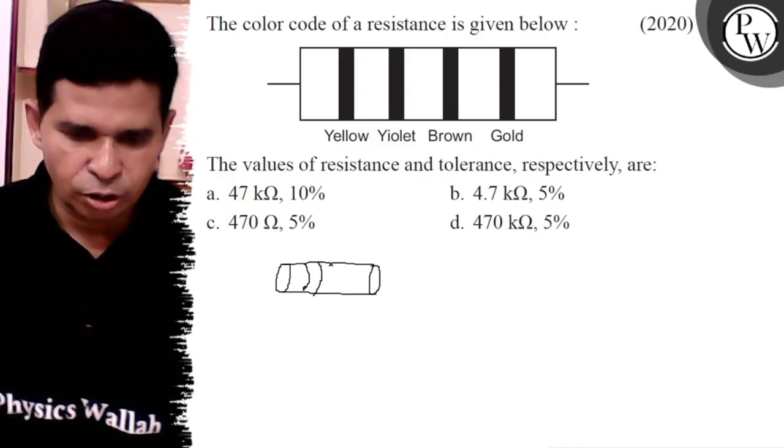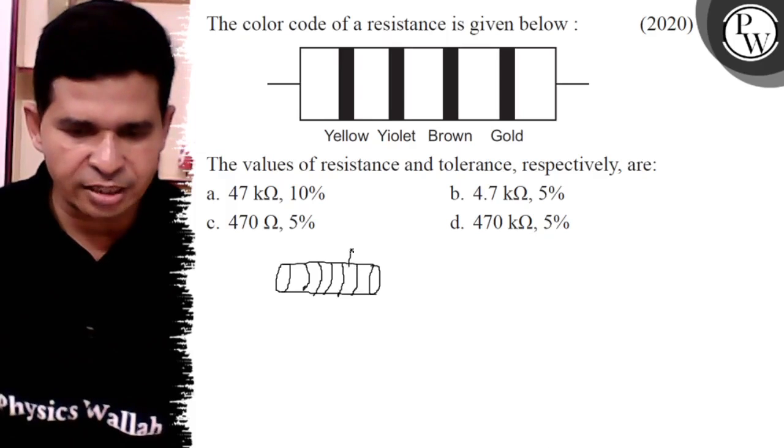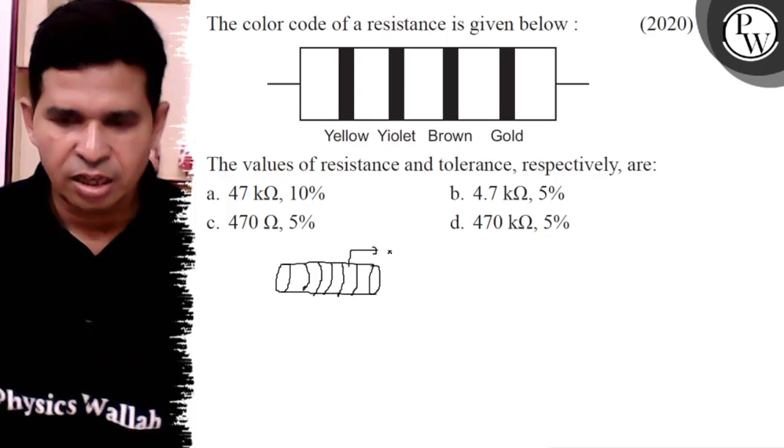It is one, two, three and fourth. Fourth does not indicate the value, it indicates the tolerance.